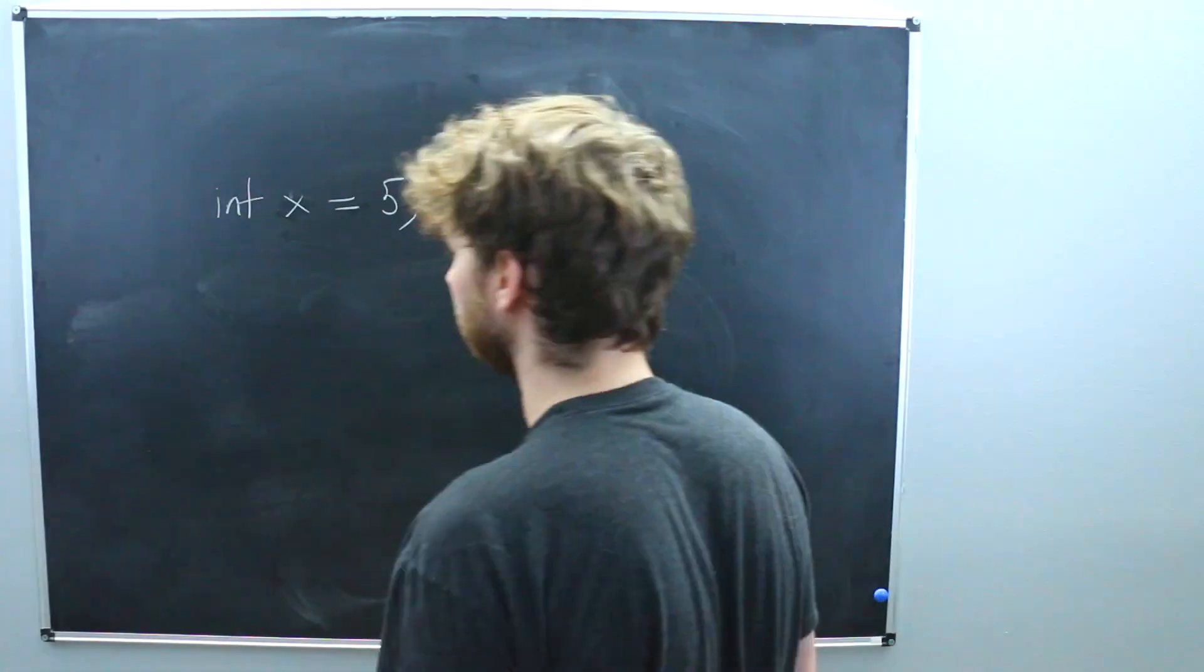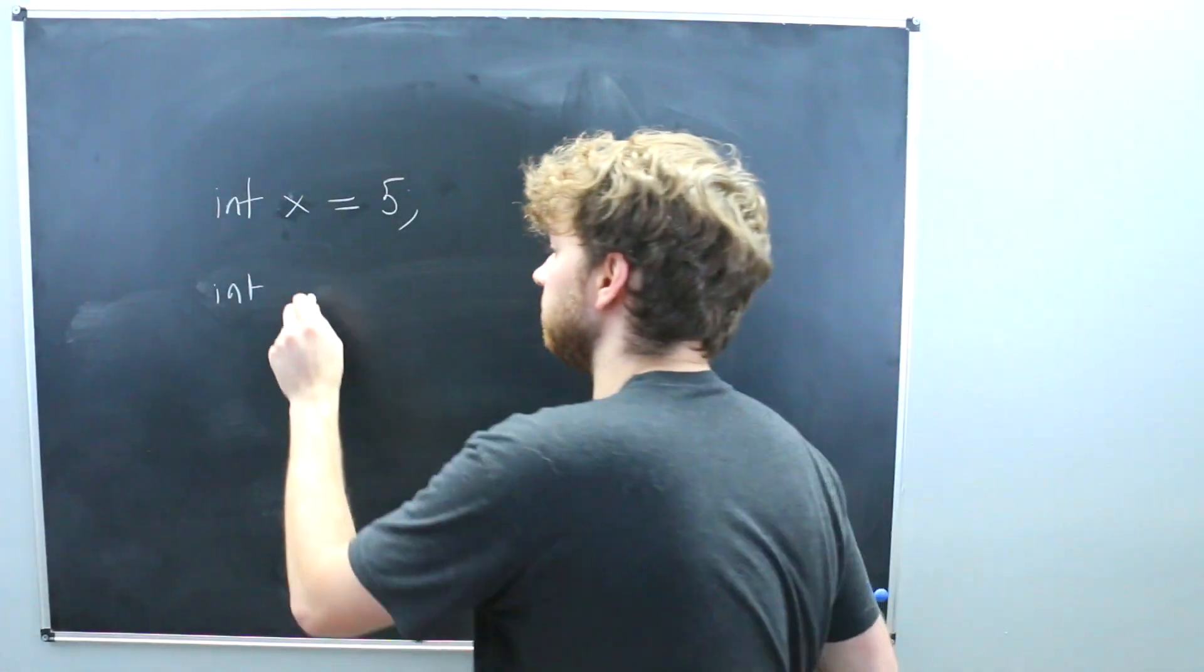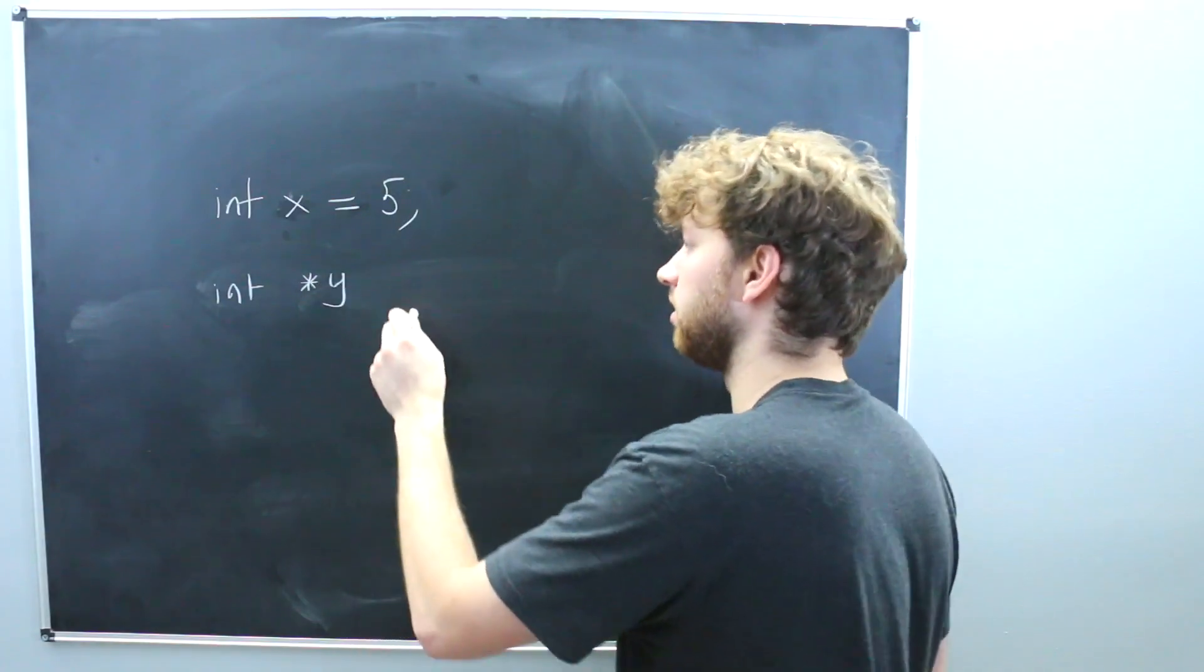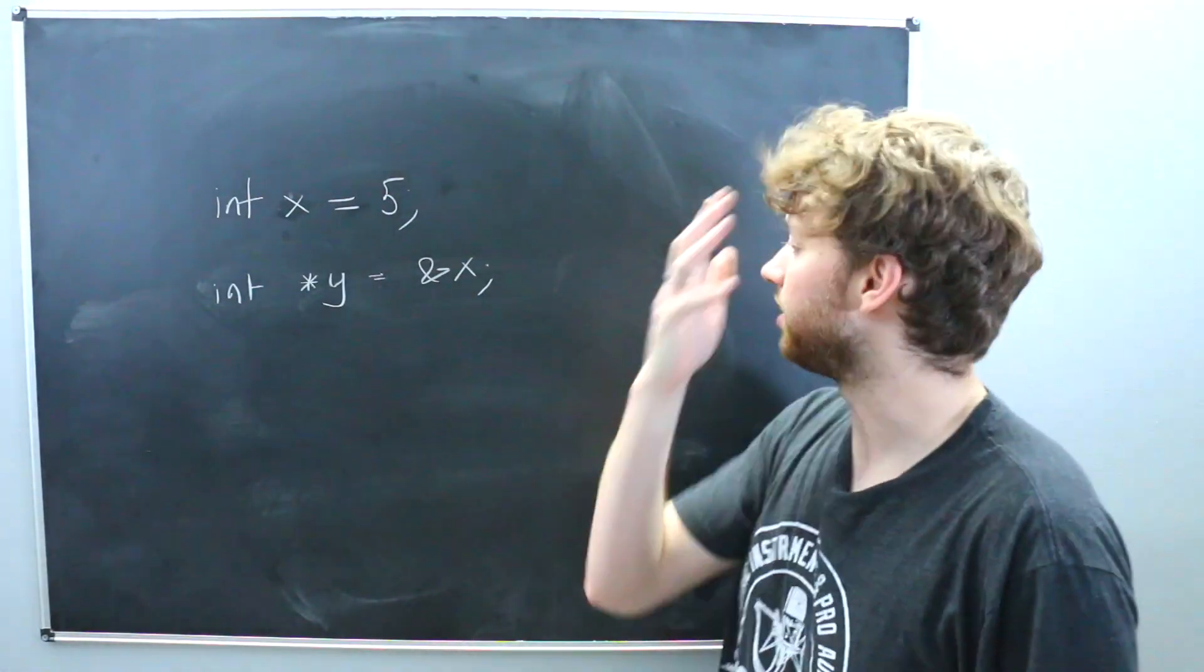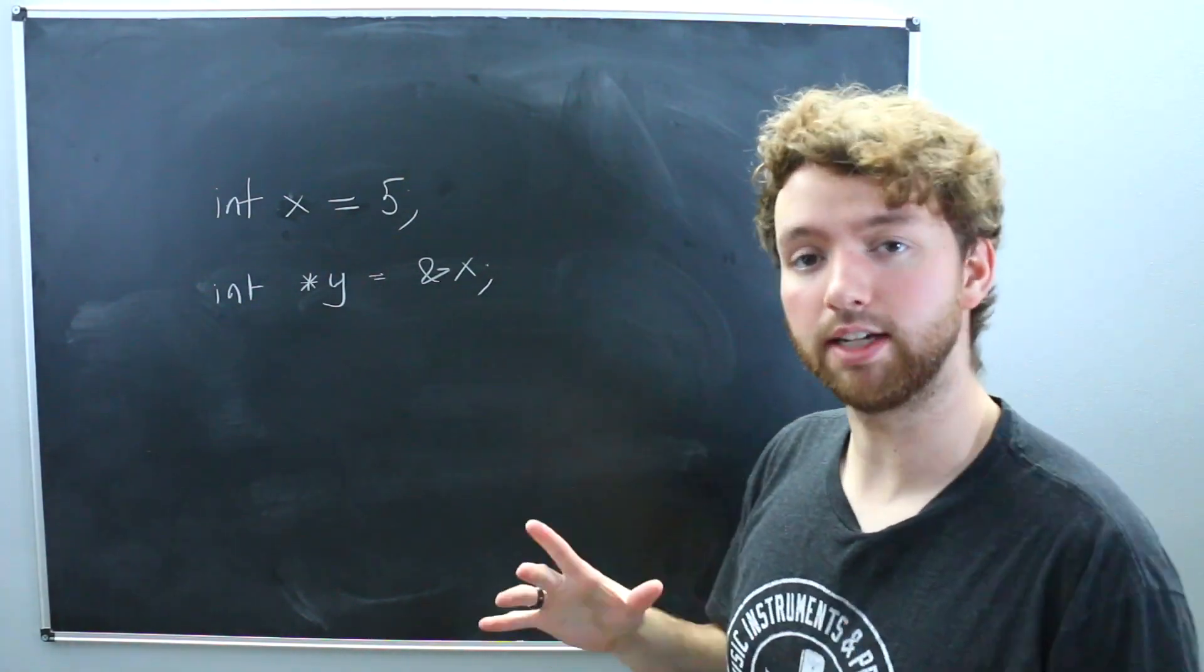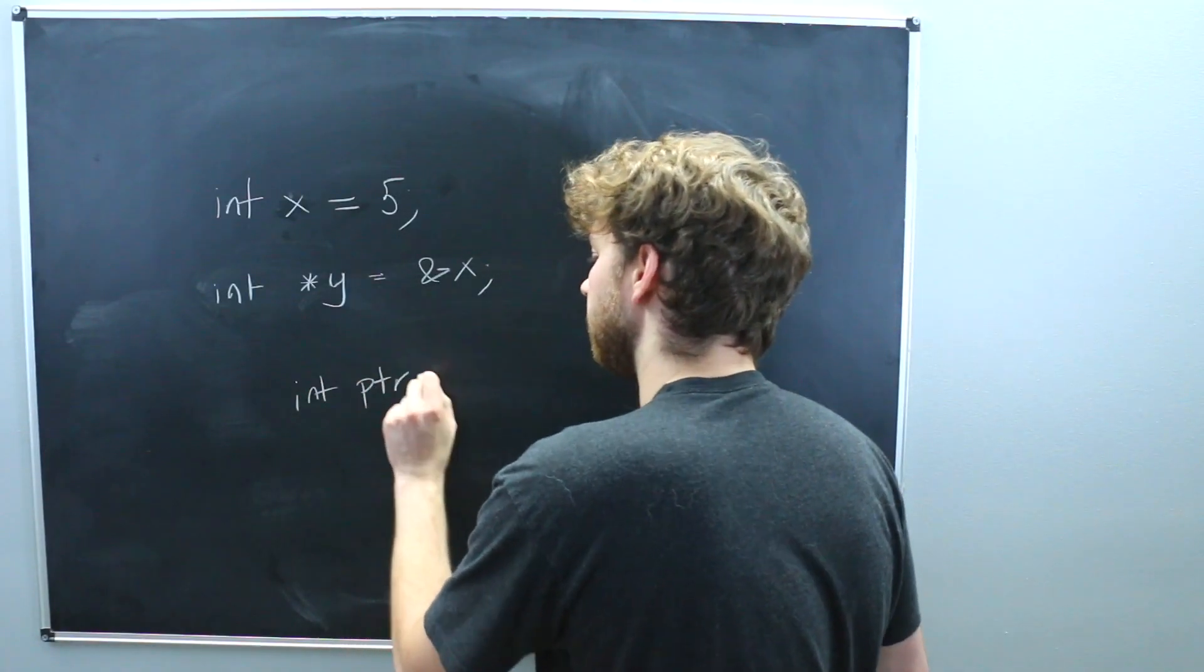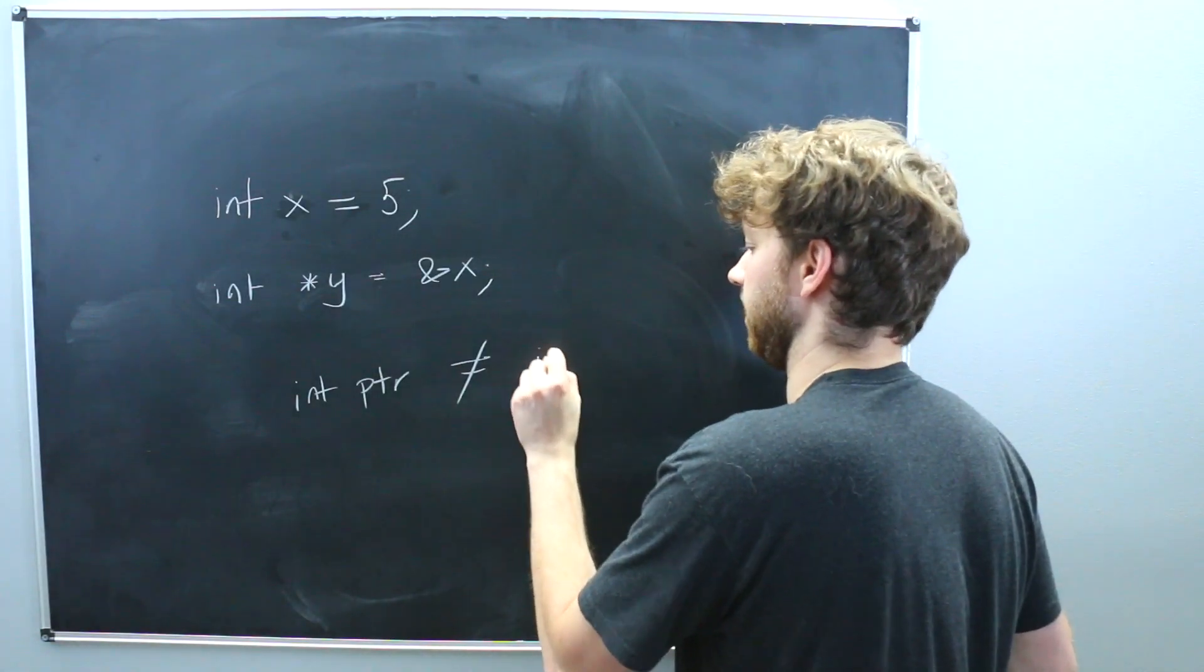Well, it's going to look like this. We're going to say int. And then to say that this is a pointer, you use the asterisk and then give it a name. So for example, y. And then you assign it the address of x in this case. So this is the syntax to create a pointer of type int. So it's not an integer. It's an integer pointer. These are two separate types in C++. So int pointer is not the same thing as int.